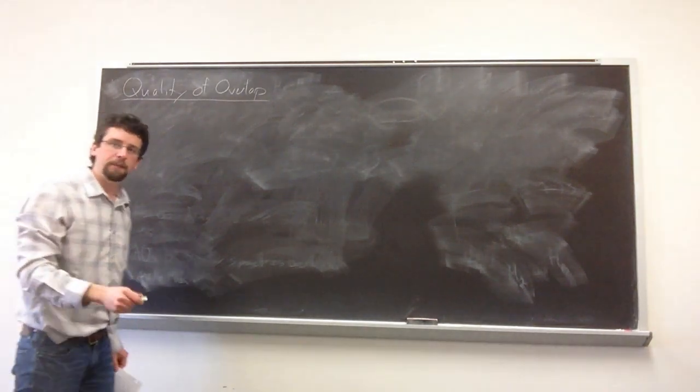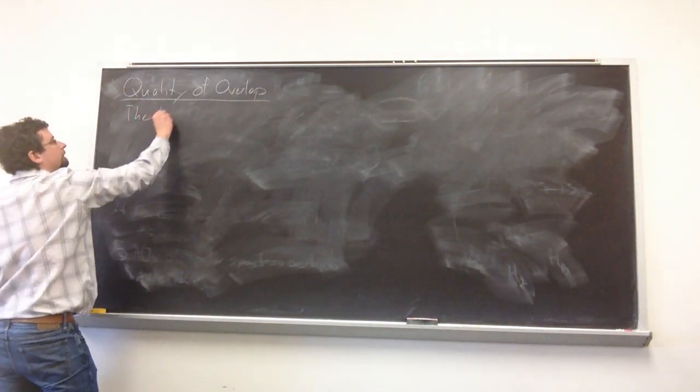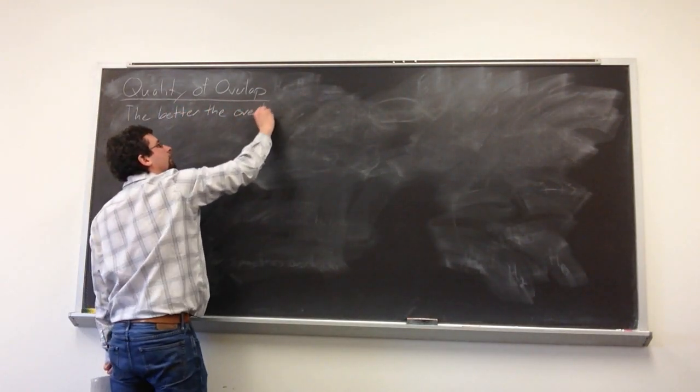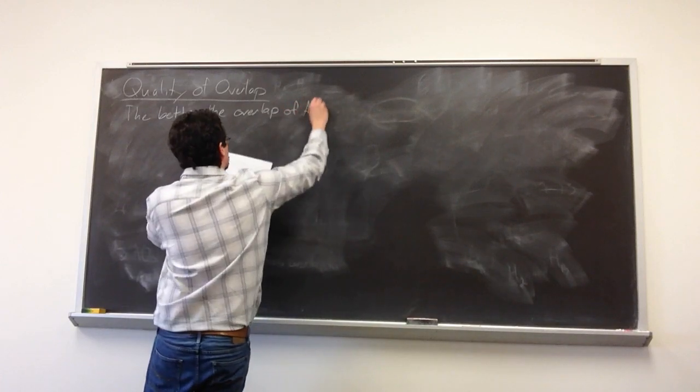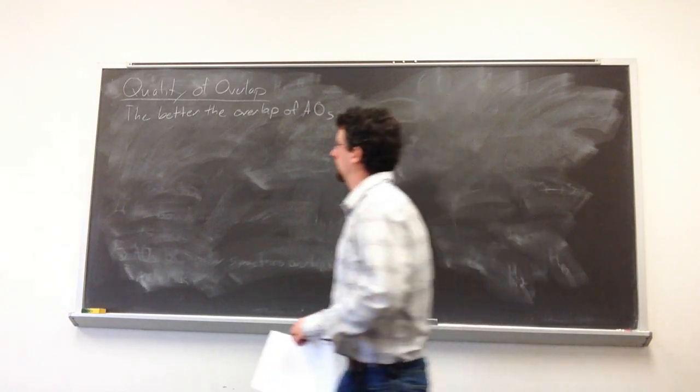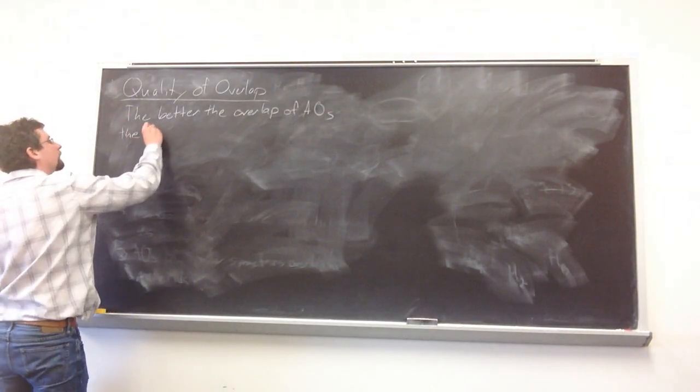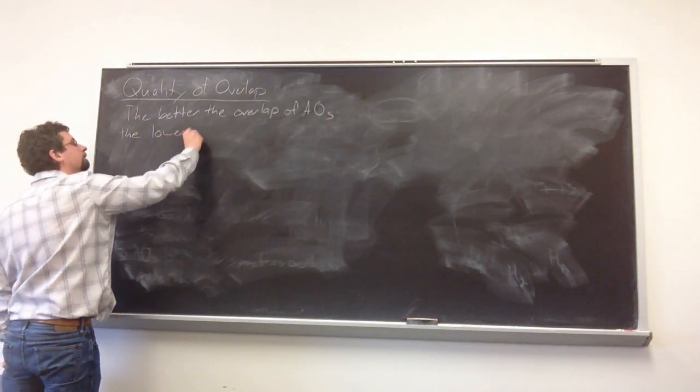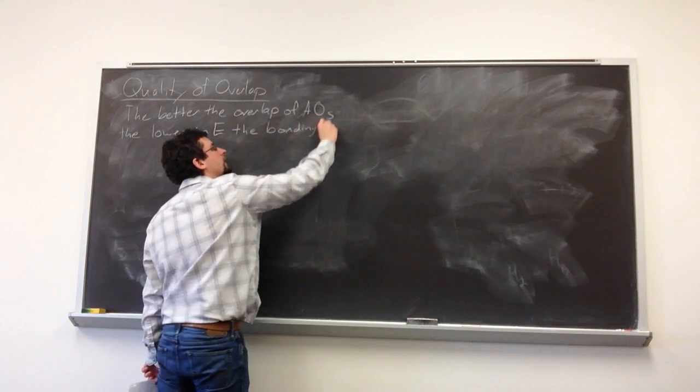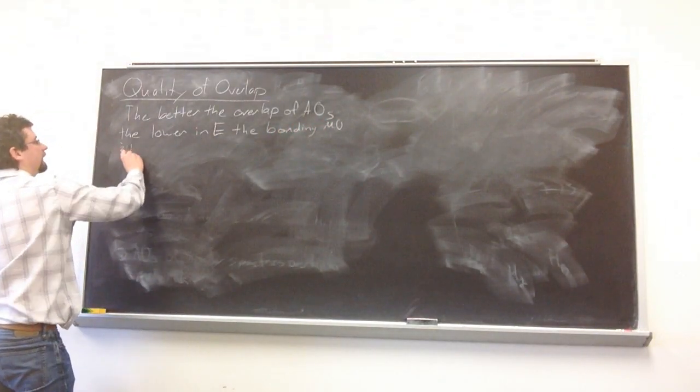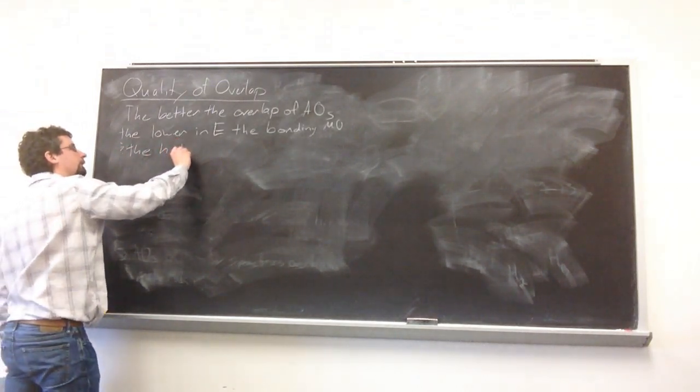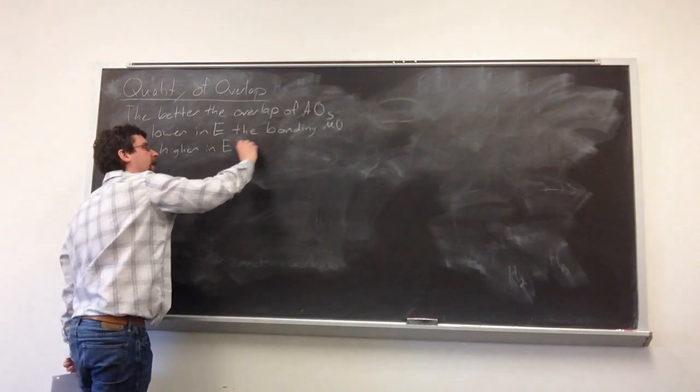So the quality of overlap: the better the overlap between the atomic orbitals, the lower an energy the bonding MO becomes, and the higher an energy the anti-bonding orbital becomes.